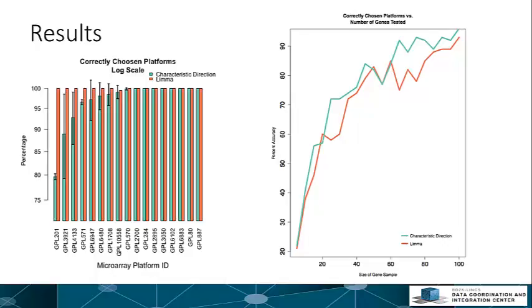However, the LIMMA dataset did contain more genes per signature. The effect of gene set size on the model was also tested, as shown in the figure on the right. As gene set size increases, so does overall accuracy. The model predicts platforms with approximately 80% accuracy with 50 genes but does not reach 90% accuracy for both methods until approximately 90 genes.